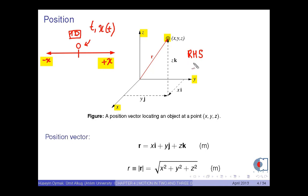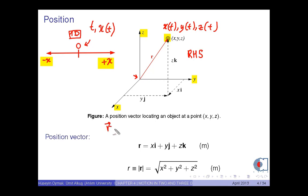If we specify the origin as this point, the position of the object will be x of t, y of t and z of t. By the help of the discussion of vectors in Chapter 3, we denote the position vector of this object at time t in unit vector notation as vector r of t equals x of t i-hat plus y of t j-hat plus z of t k-hat, which is in meters in SI units.